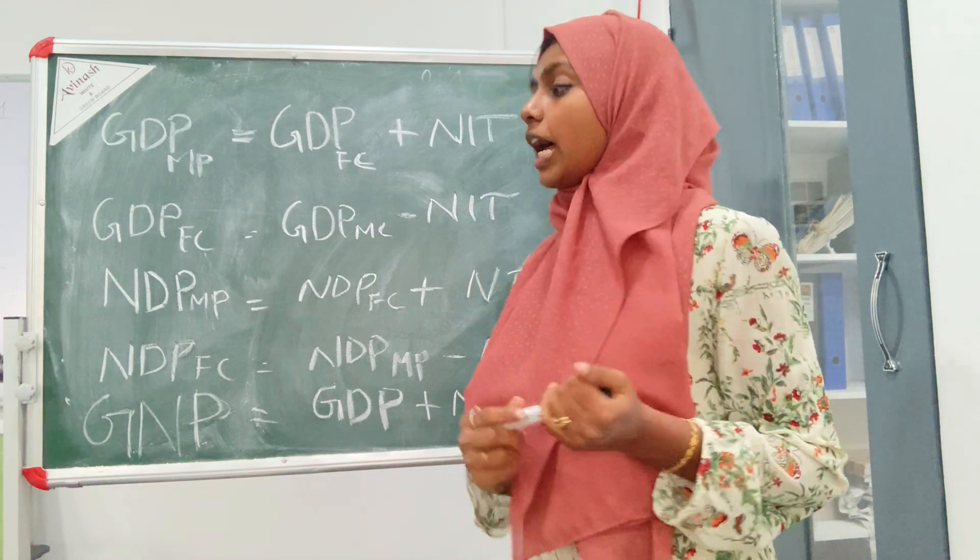Factors of production flowing from households to firms constitute the real flow. Factor payments — rent, wage, interest, profit — flowing from firms to households constitute the money flow. Goods and services flowing from firms to households is also a real flow, while payment for those goods and services is a money flow. So in circular flow of income, there are two real flows and two money flows.